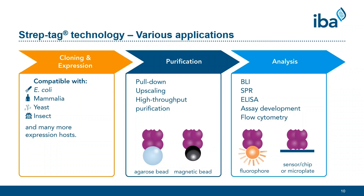Taken together, IBA offers a complete range of products to support the entire protein analysis workflow from cloning and expression to purification and further studies. A special feature is the scalability of these applications, which can be performed in small single reaction volumes up to large batches. Streptag products can also seamlessly be integrated into existing workflows without the need for a completely new setup.